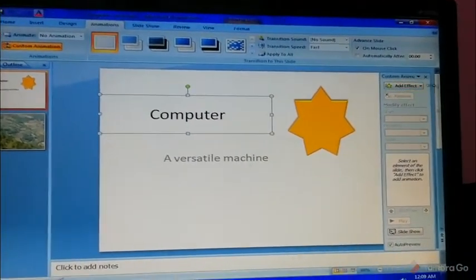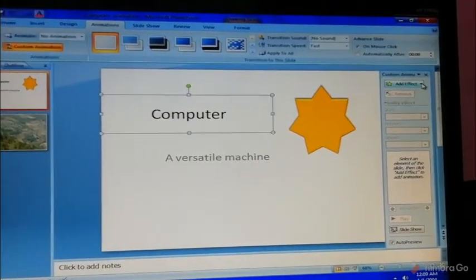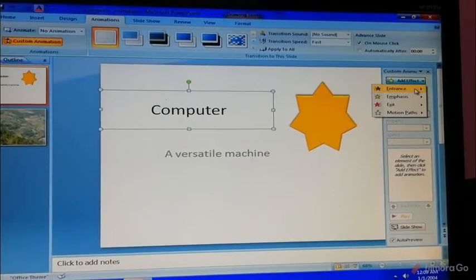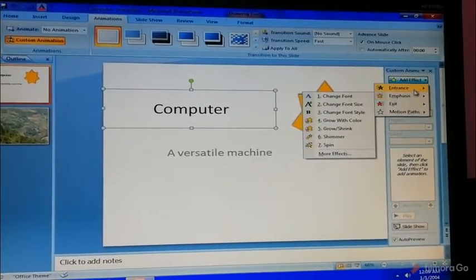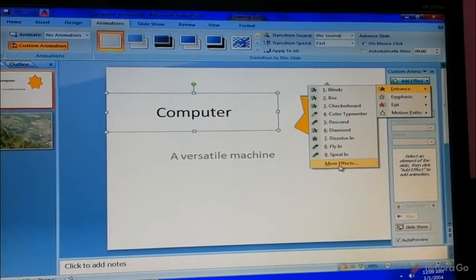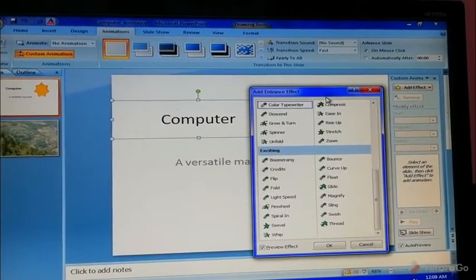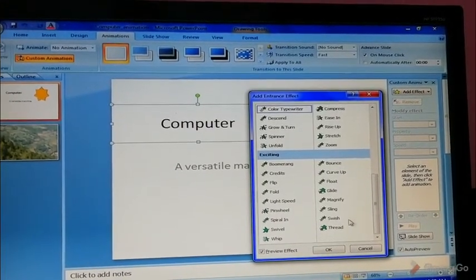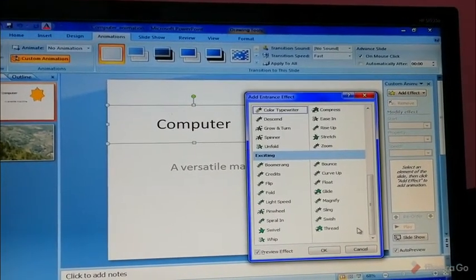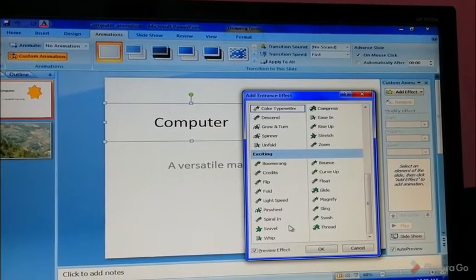The Custom Animation task pane will appear. Then click on the second object, then choose More Effects. Click on the flag. It will show you all the four categories. Click on Entrance and More Effects to see the more effects.